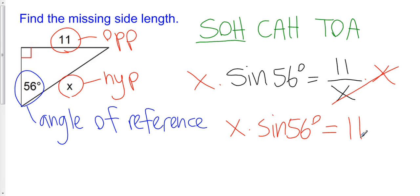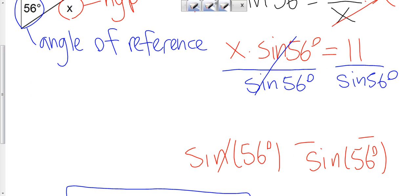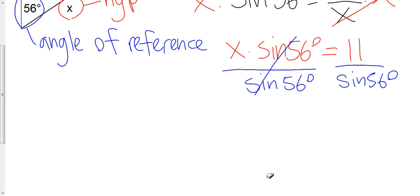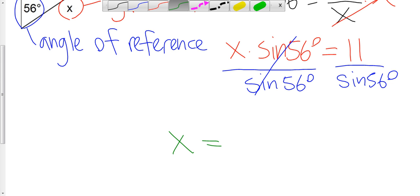Now I can solve this problem. I need to isolate x by dividing both sides by the sine of 56 degrees. That cancels out, and I get x is equal to 11 over the sine of 56 degrees. Plugging that in: 11 divided by the sine of 56 is approximately 13.3.